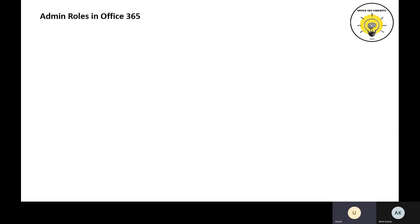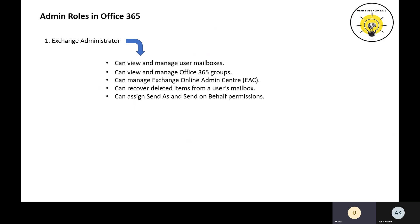In Office 365, we have multiple admin roles available that you can assign to your user accounts. The first admin role is Exchange Administrator. If you assign this role to a user account, he will be able to view and manage user mailboxes, view and manage Office 365 groups, manage Exchange Online Admin Center, recover deleted items from users' mailboxes, and manage permissions like Send As and Send On Behalf permissions.